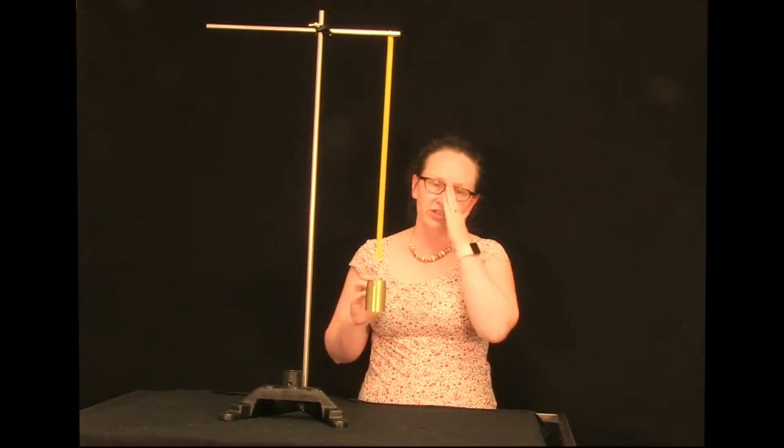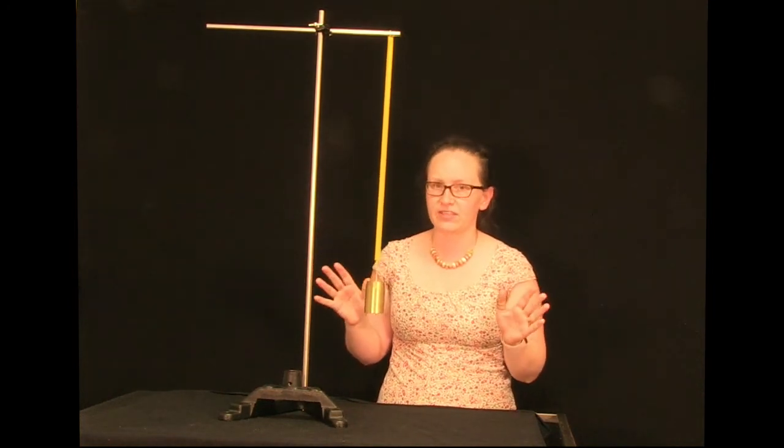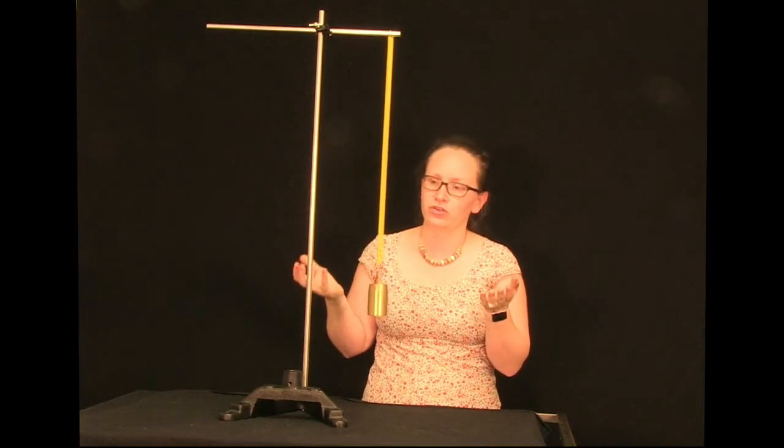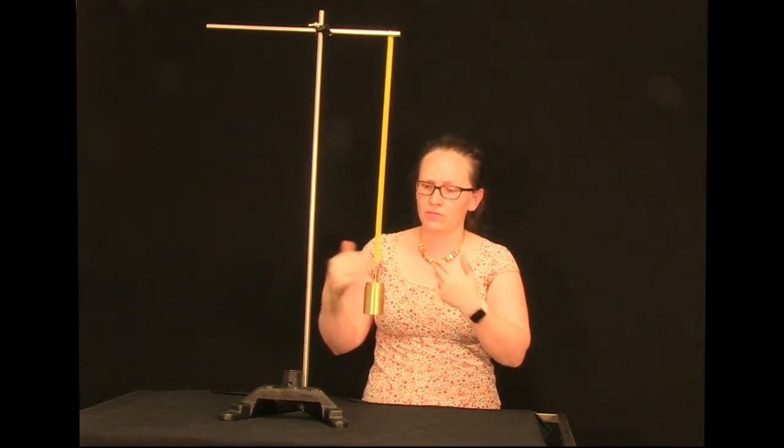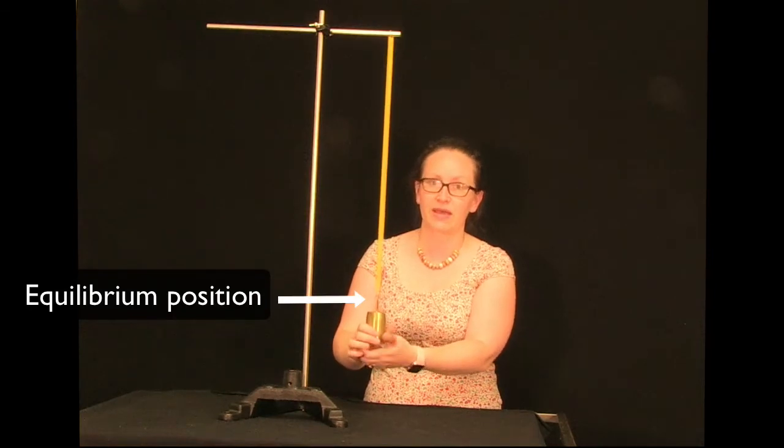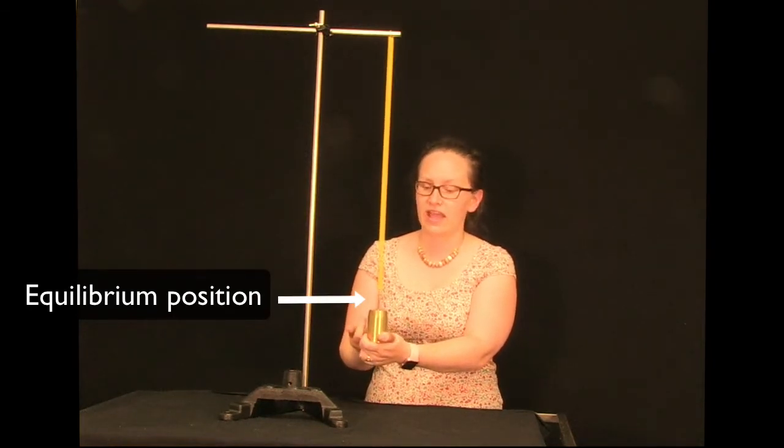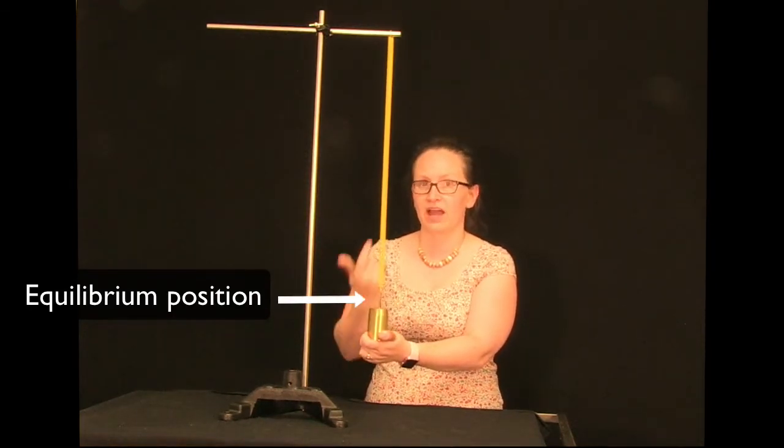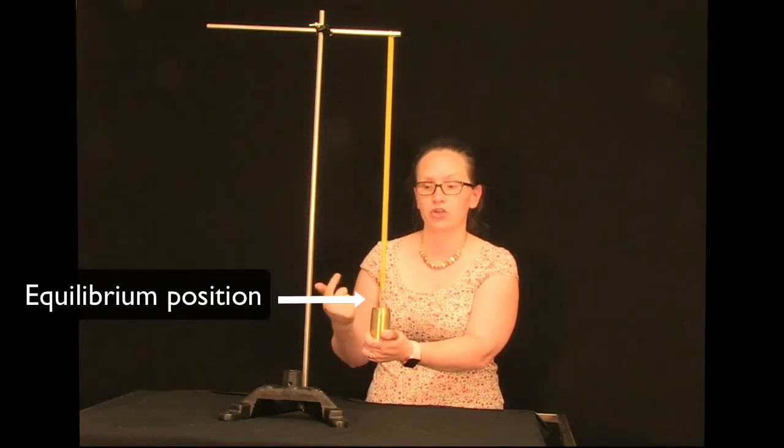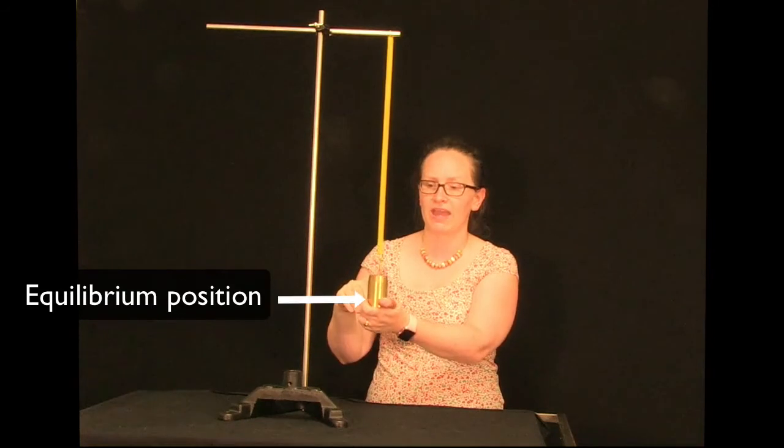A mass on a spring such as this one is a nice example of simple harmonic motion. That's because this spring obeys Hooke's law. So when I move the spring away from the equilibrium position, like extending this mass downwards, there's now a force from the spring upwards as it tries to contract. And that force is proportional to the distance from that equilibrium position.